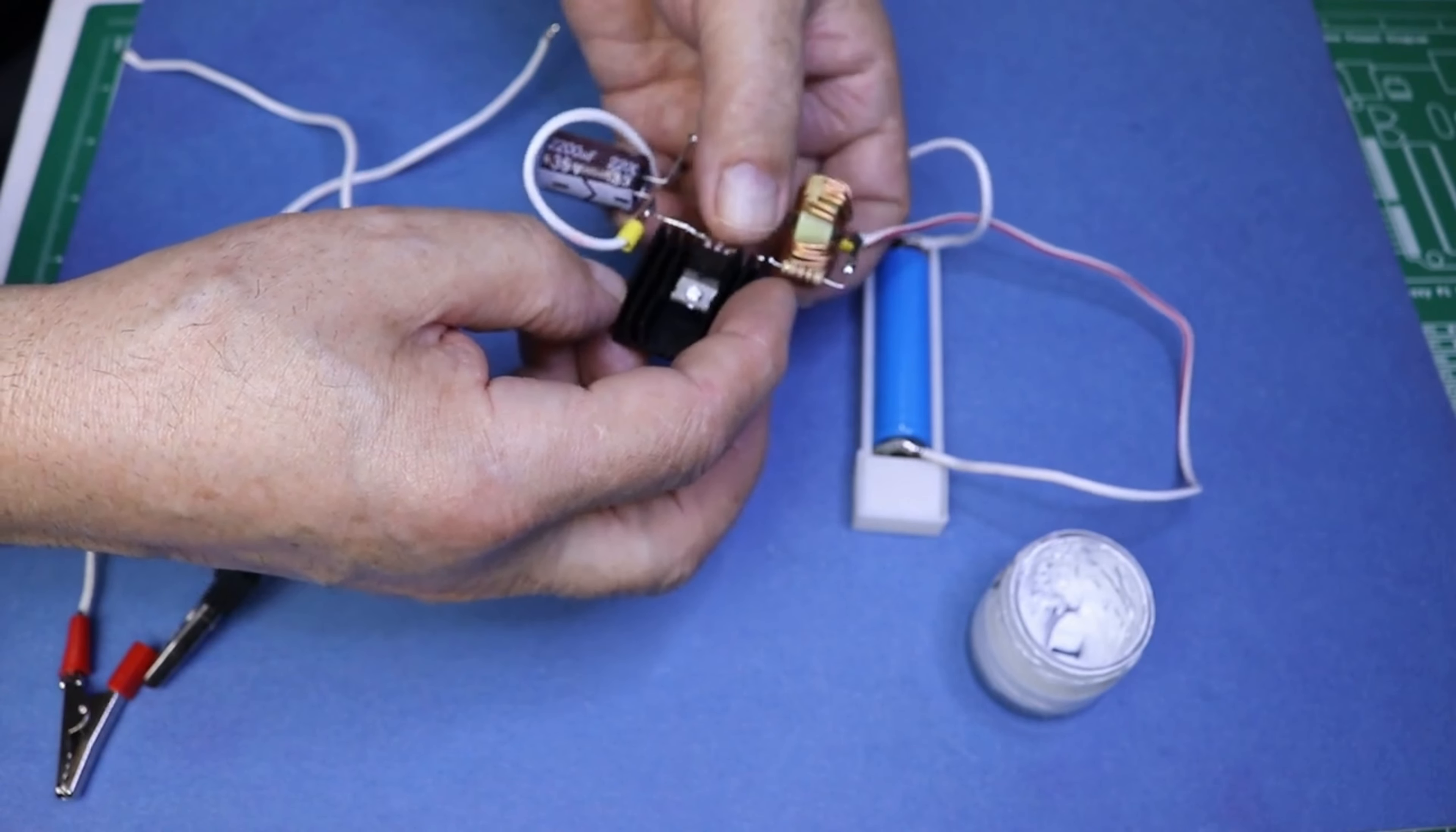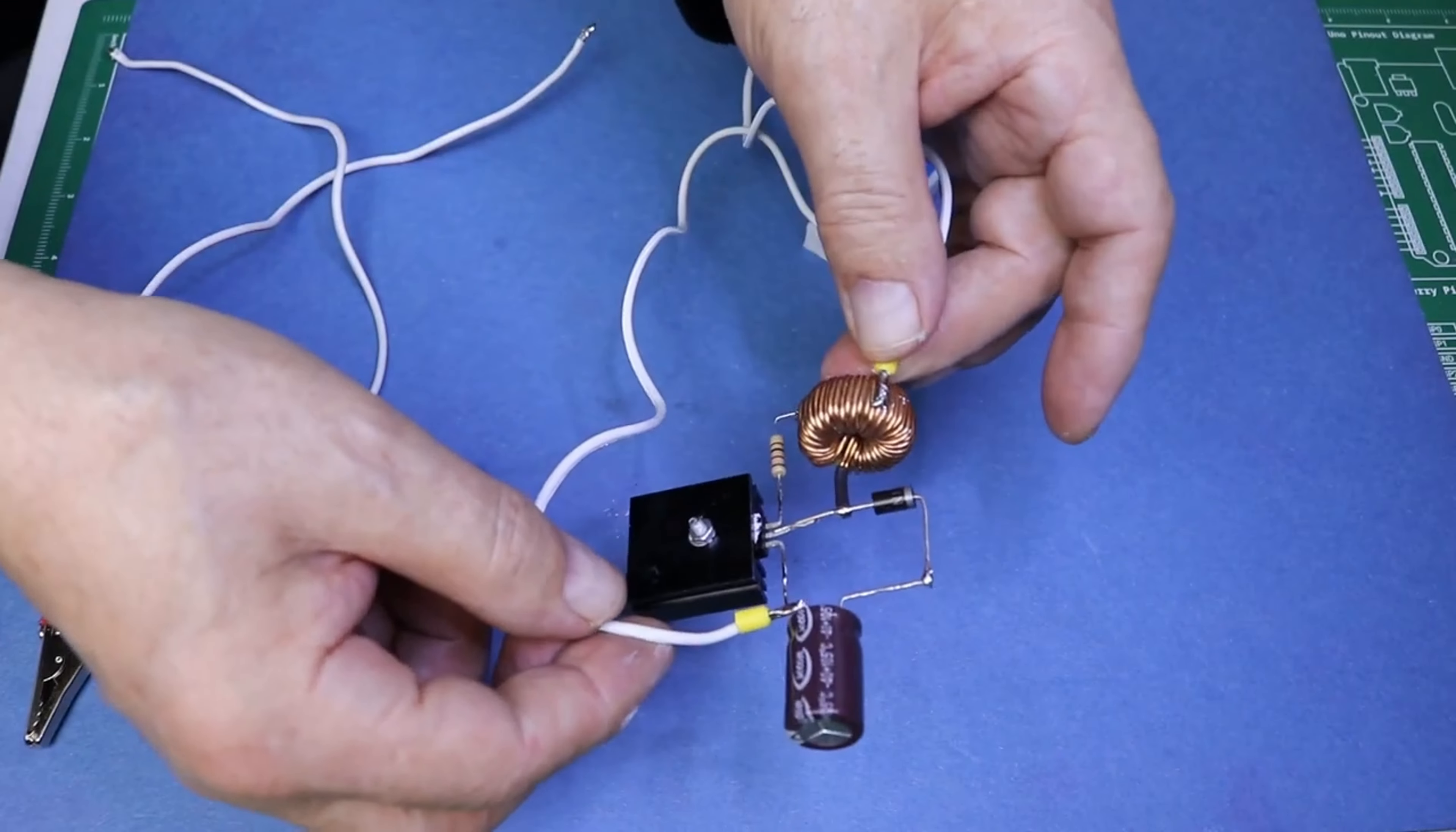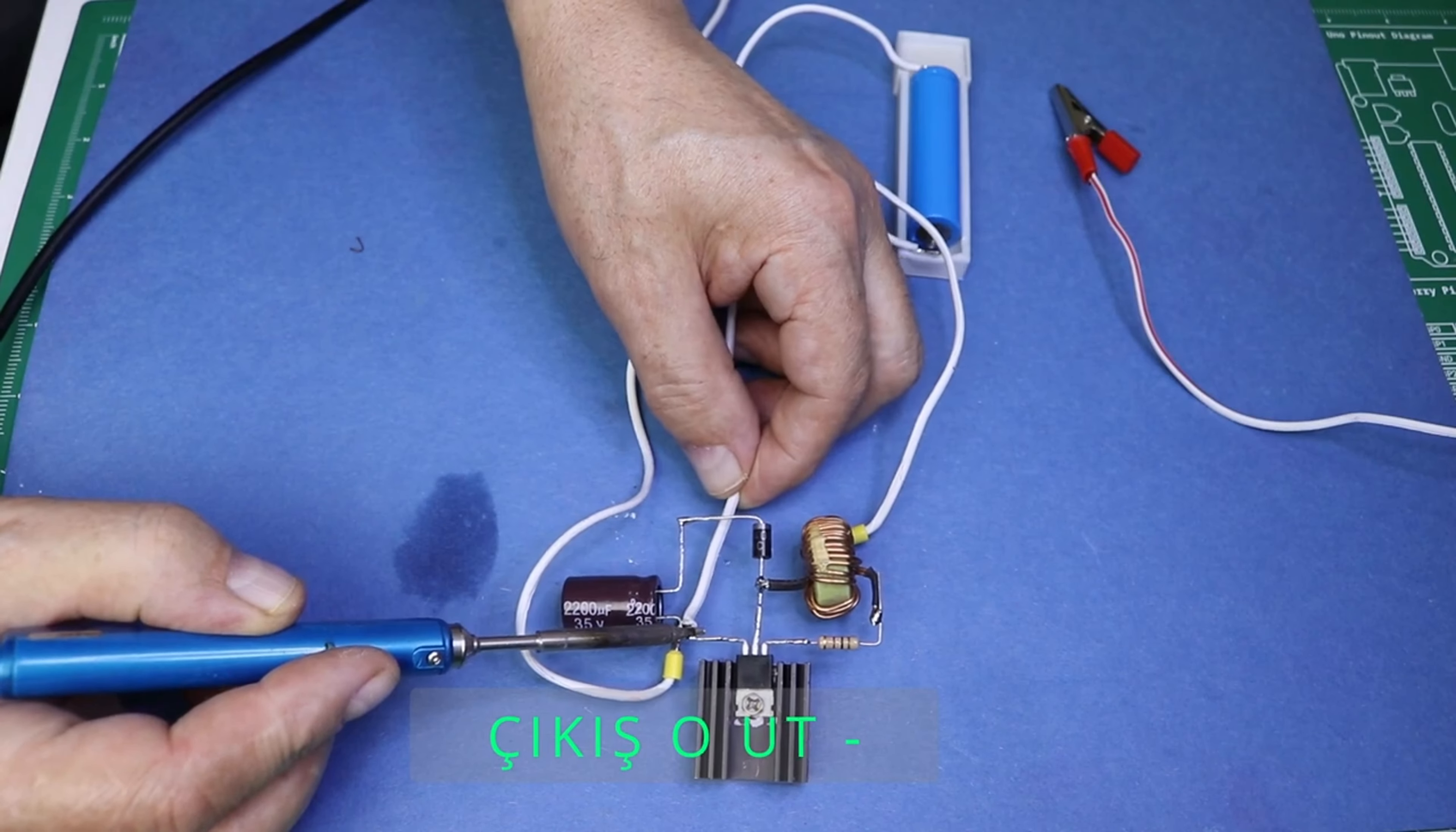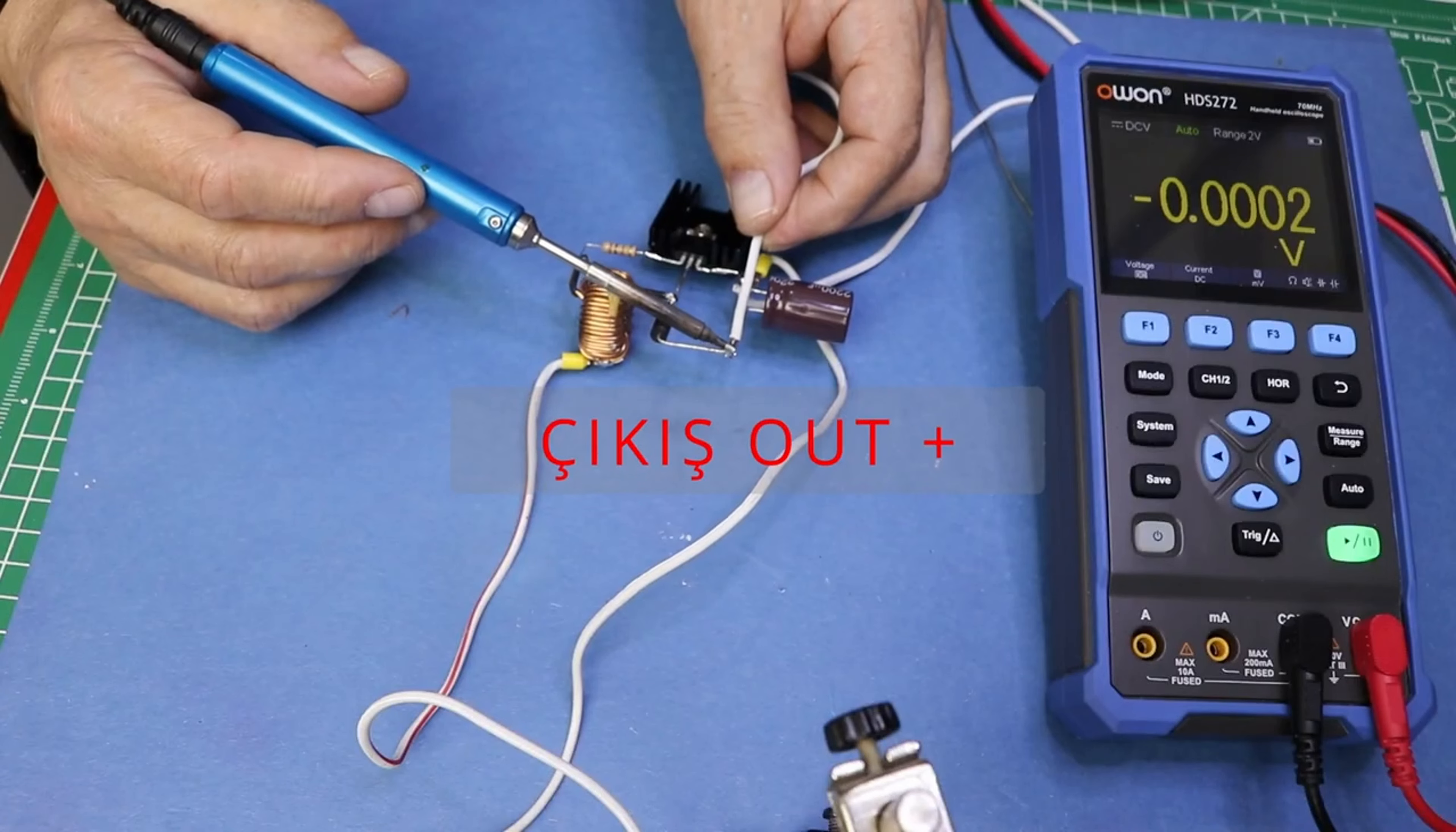Connect the diode. Connect the 1N5408 diode to the circuit. The diode will be used to direct energy from the inductor to the battery.